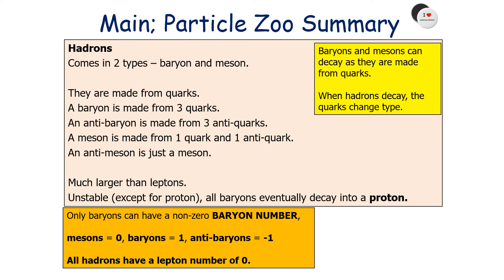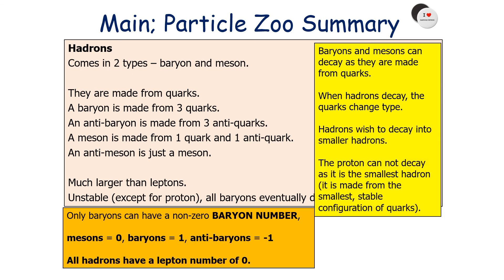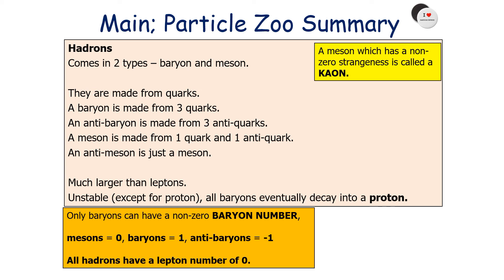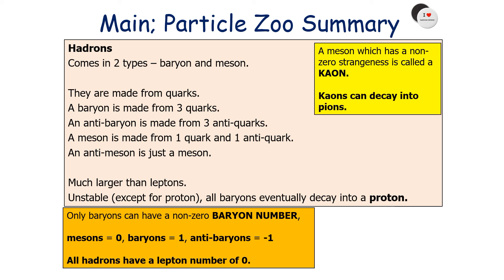Baryons and mesons can decay as they're made from quarks — when hadrons decay, the quarks change type. Hadrons wish to decay into smaller hadrons, so the proton cannot decay as it's the smallest hadron, made from the smallest stable configuration of quarks. Anti-mesons do not exist separately because the anti-meson would just be the quark and anti-quark swapping around. A meson with a non-zero value of strangeness is called a kaon. Kaons are always produced in pairs and can decay into pions.